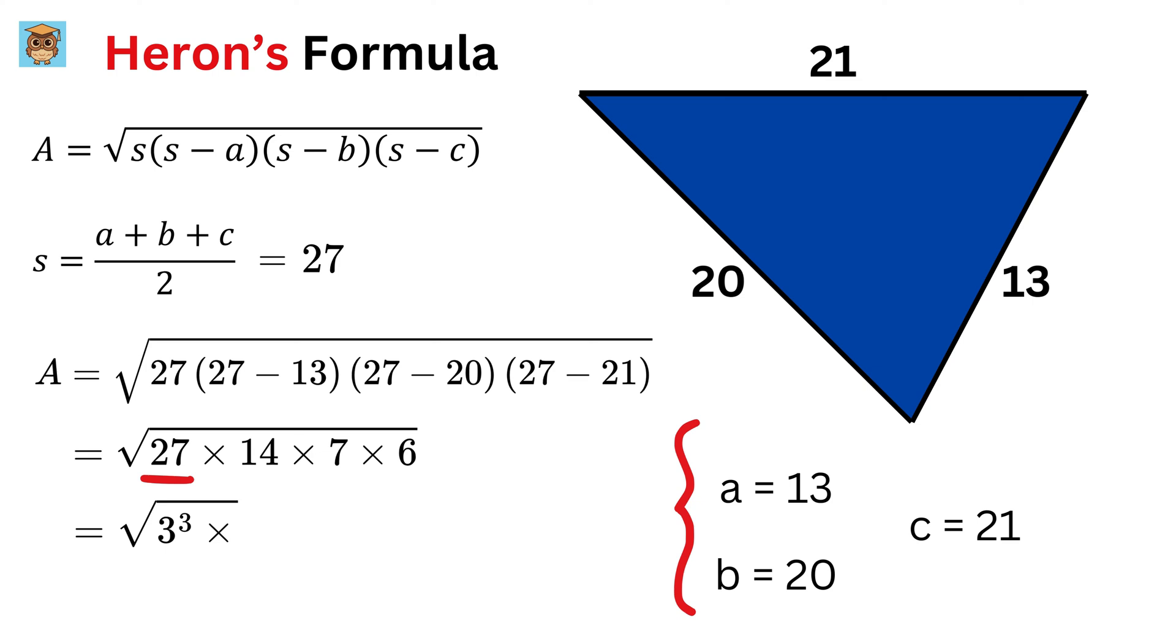Now, 27 equals 3 cube, 14 equals 2 times 7, and this 6 can also be rewritten as 3 times 2. So, we have this as 3 raised to the 4th power, times 2 square times 7 square.